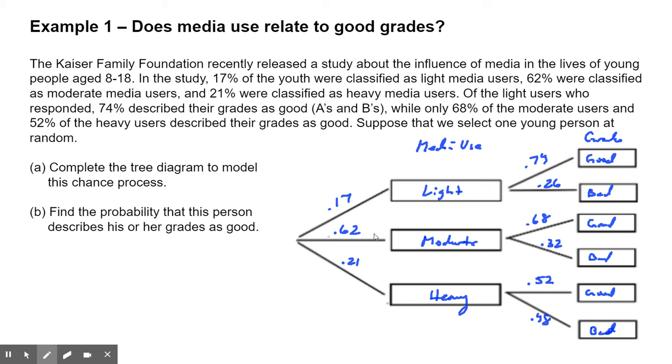So now the question is, find the probability that they think their grades are good. So the probability of having good grades. Well, there's three branches that say good. Here, I'll use red. Here, here, and here. So we have to follow the branch like this. So to get there, we have to go this way. That's one. This way, that's two. And this way, that's three.